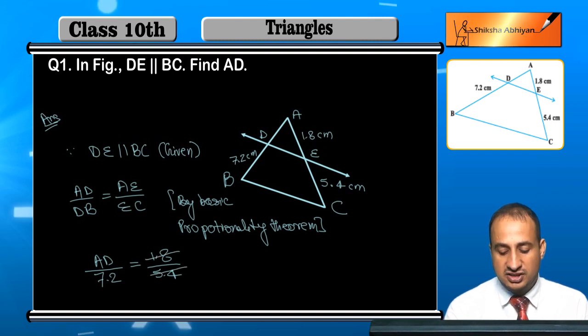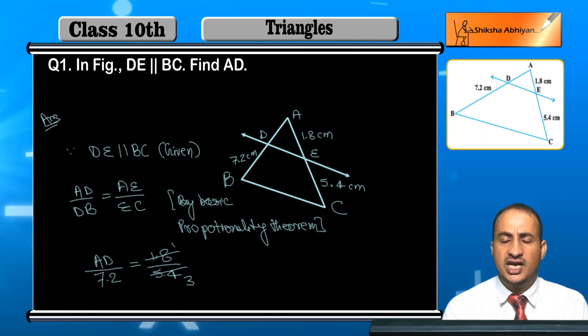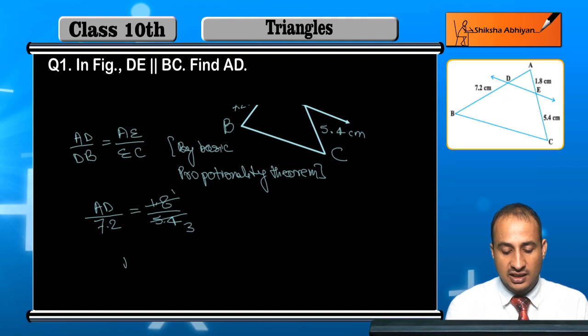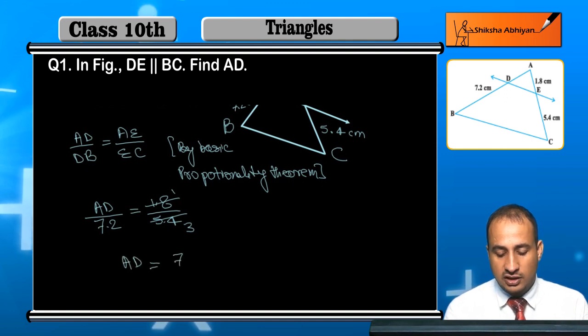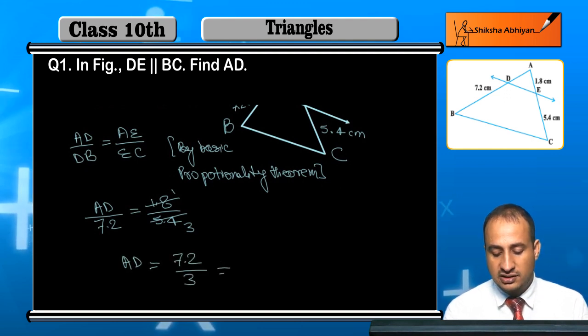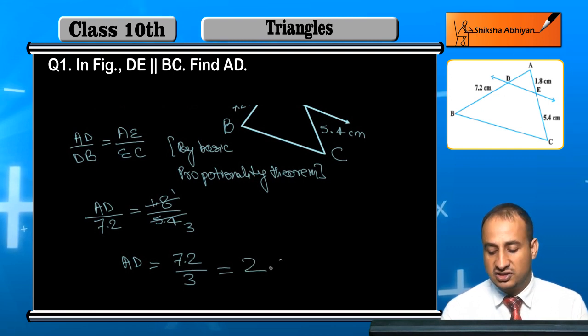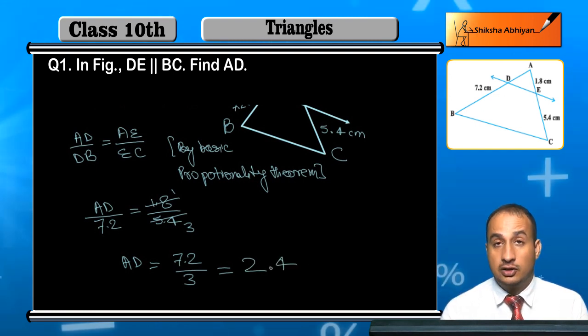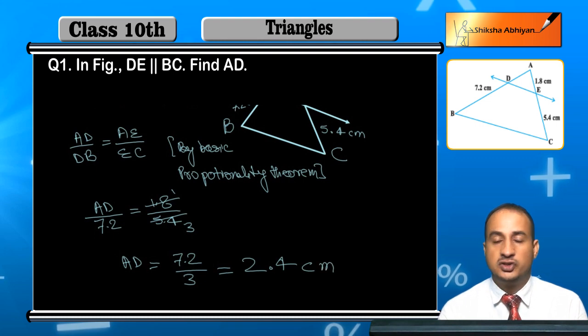Now 1.8 and 5.4 - this is 18 by 54, which equals 1 upon 3. So AD equals 7.2 by 3. Dividing, 7.2 by 3 is 2.4. Therefore AD is 2.4 centimeter.